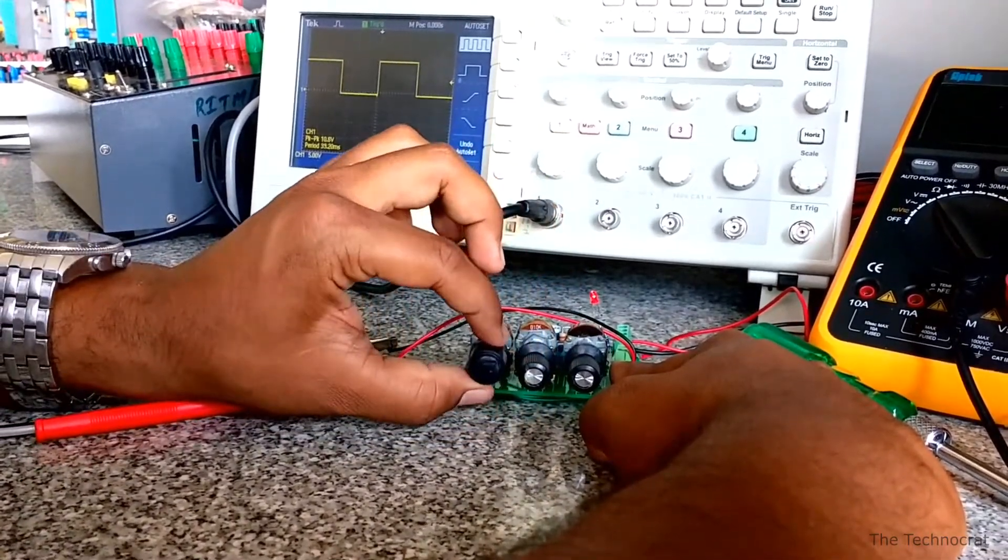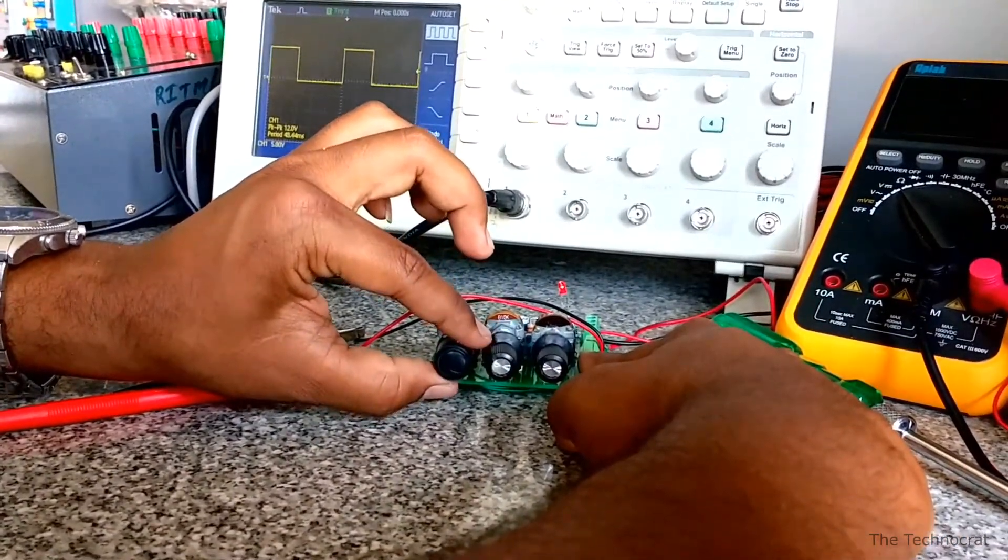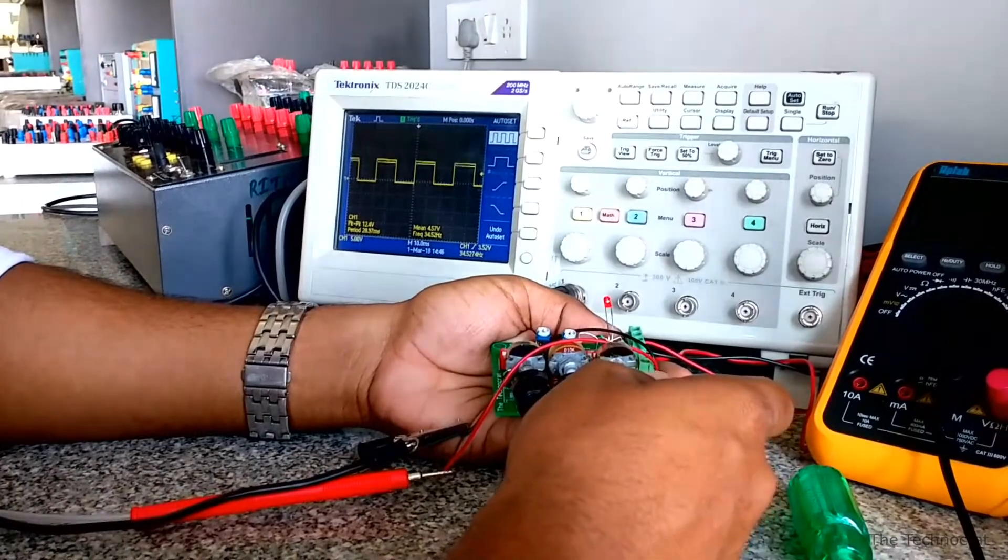The 1kΩ pot is used to adjust the duty cycle of the square wave. 4.7kΩ pot is used to vary the amplitude of the signal.